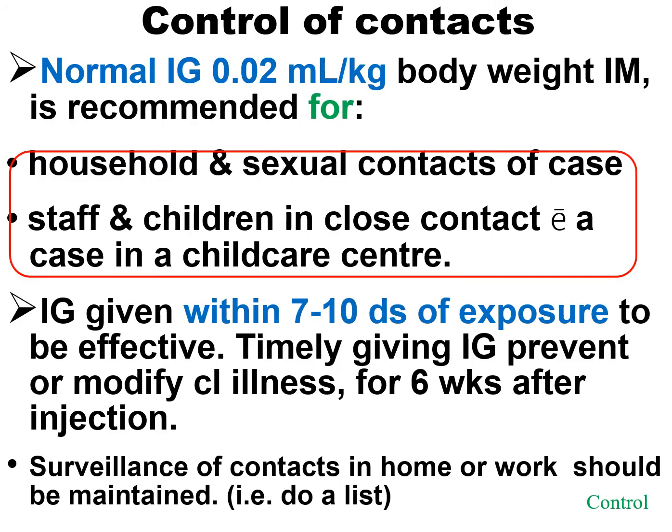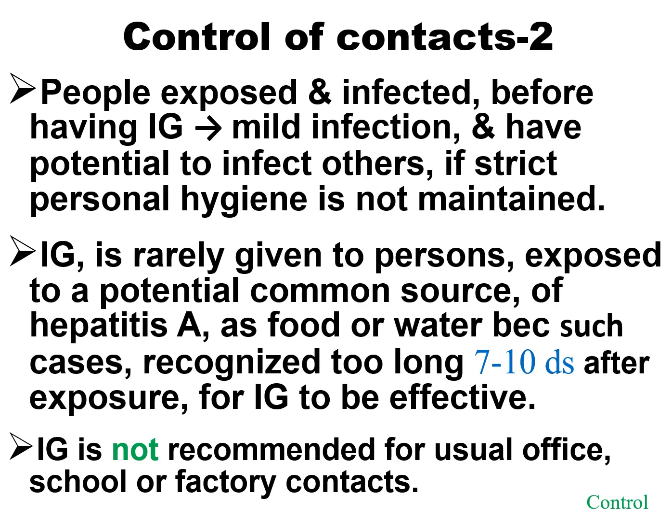Control of contacts: normal immunoglobulin (IG) 0.02 mL per kilogram body weight intramuscularly is recommended for household and sexual contacts of a case, and staff and children in close contact with a case in a children's center. IG given within 7–10 days of exposure to be effective. Timely giving of IG prevents or modifies clinical illness for six weeks after injection. Surveillance of contacts at home or work should be maintained even if IG or vaccine has been given — observe any symptoms of the disease.